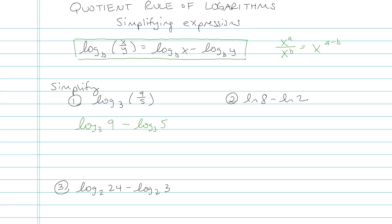And then log base 3 of 9, that means 3 to what exponent gives me the answer 9? That's 2. And then log base 3 of 5, that means 3 to what exponent gives me the answer 5? I don't know that one, so I'm just going to leave it as log base 3 of 5. And that's a little bit more simplified than what I began with.